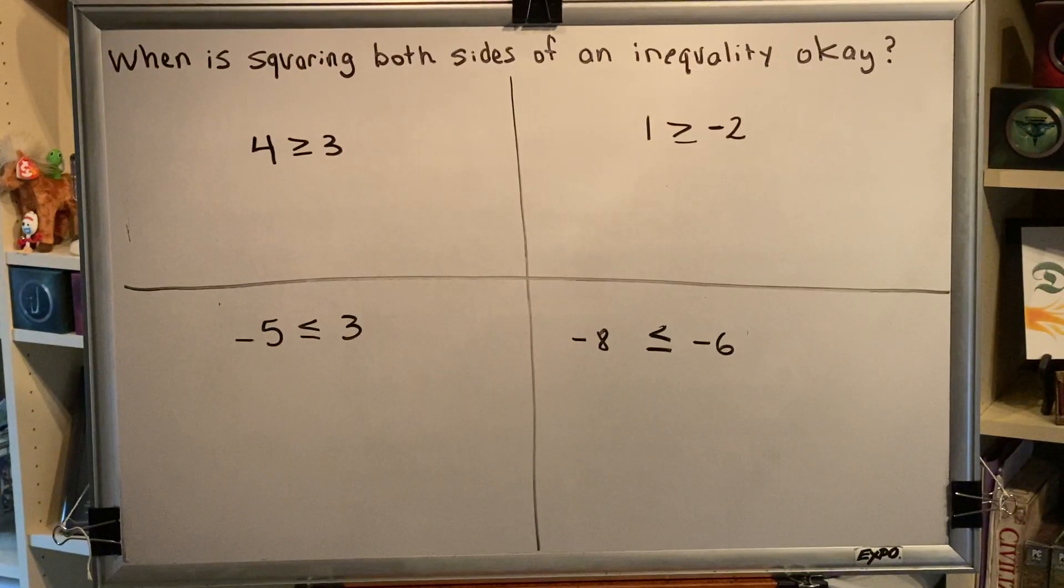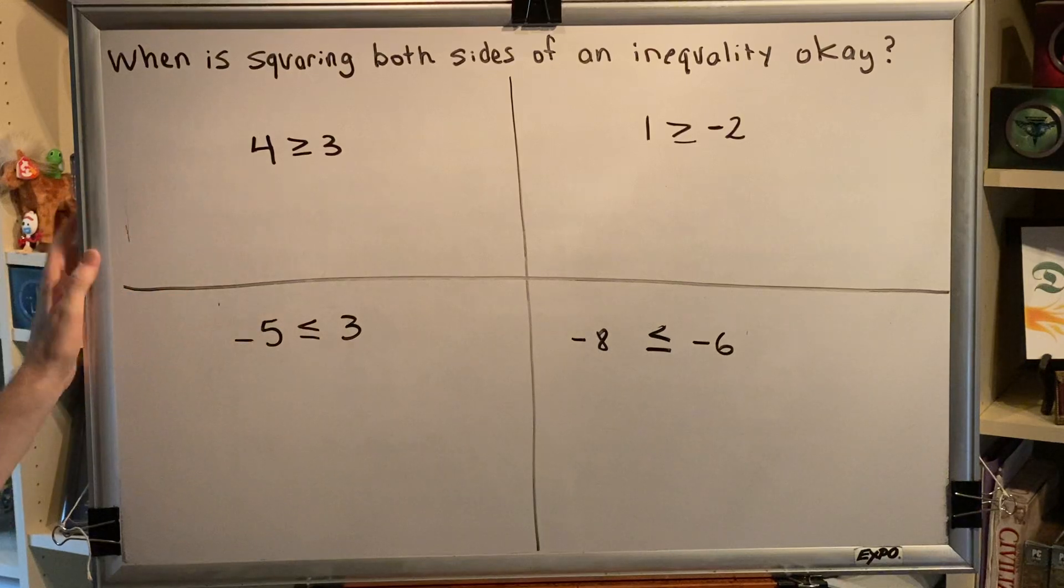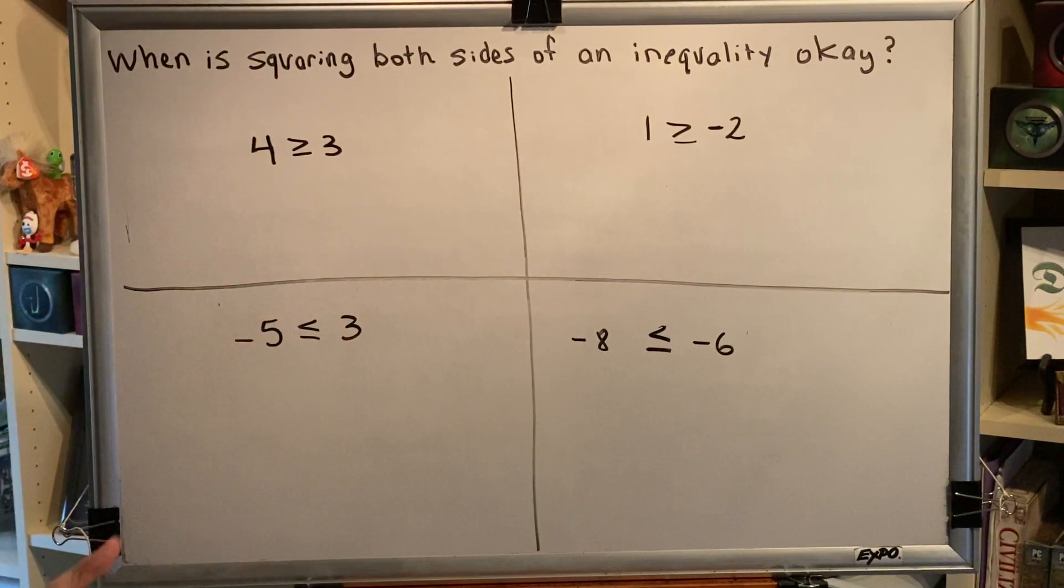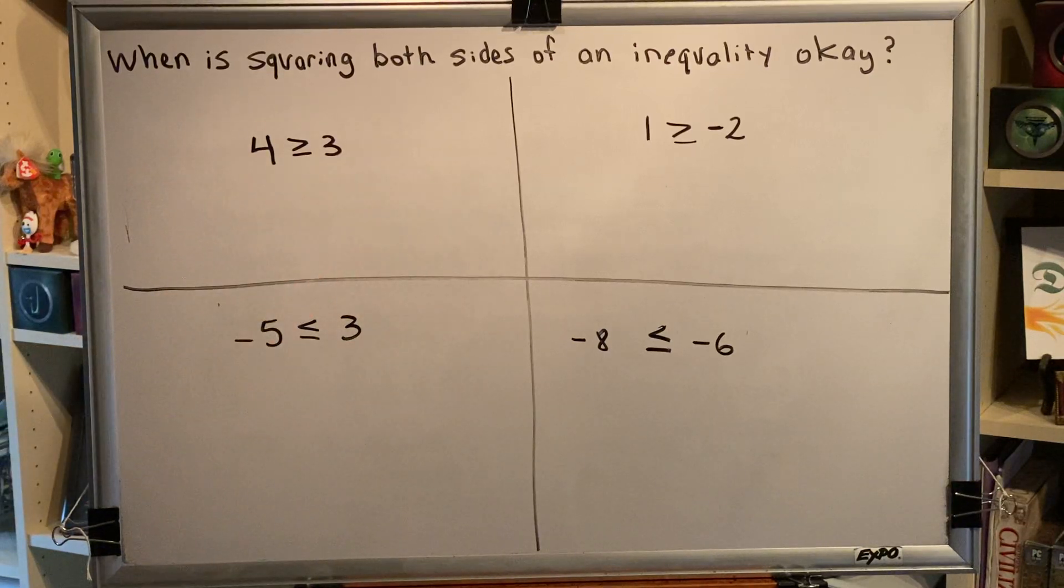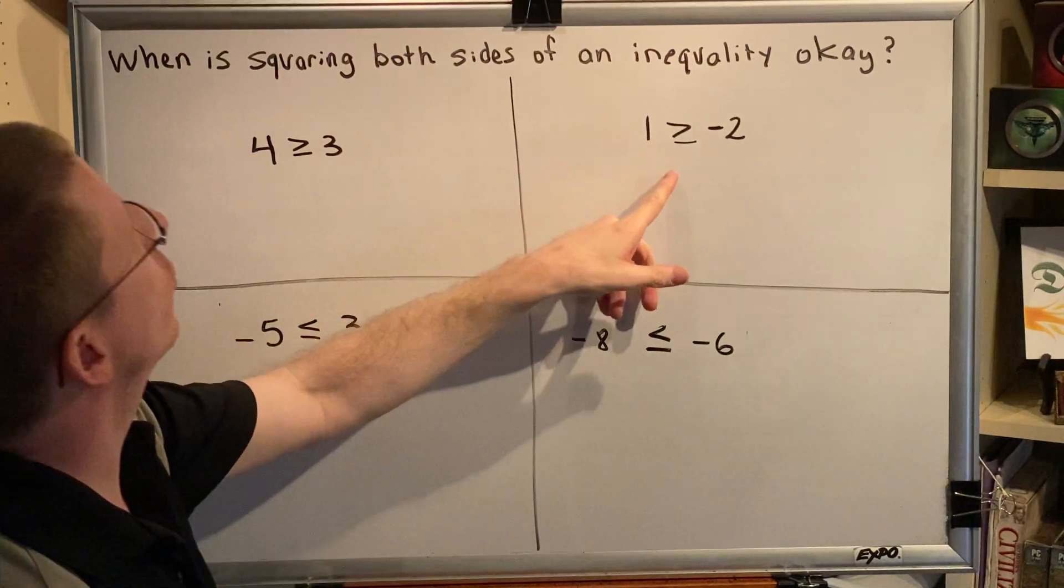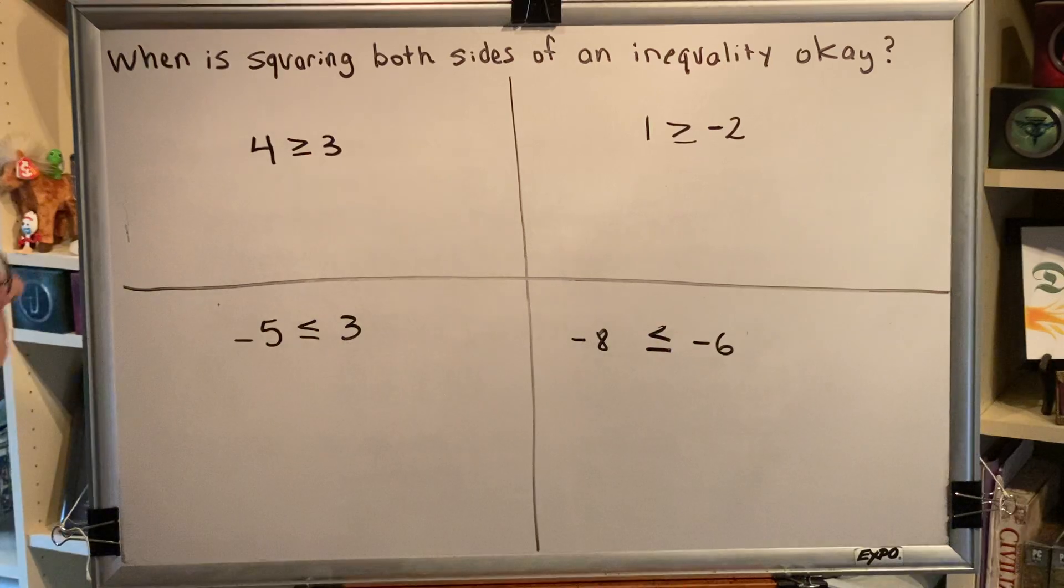The topic of this video is when is squaring both sides of an inequality okay? Let's look at some examples. I have four inequalities drawn here on the board and every single one of them is true. Four is greater than or equal to three, that's true. One is greater than or equal to negative two, that's true.